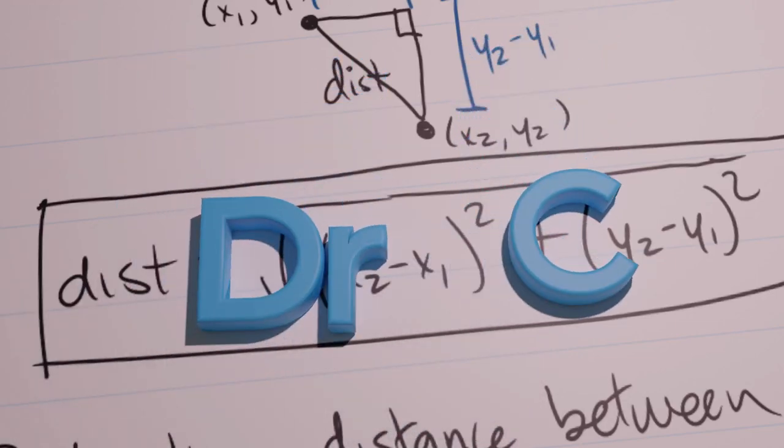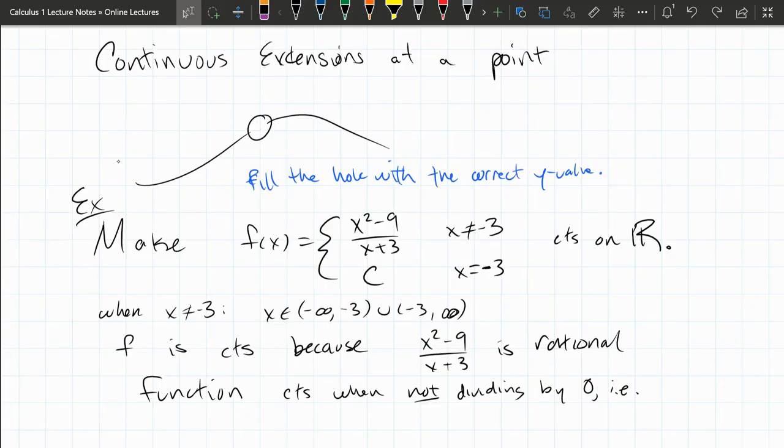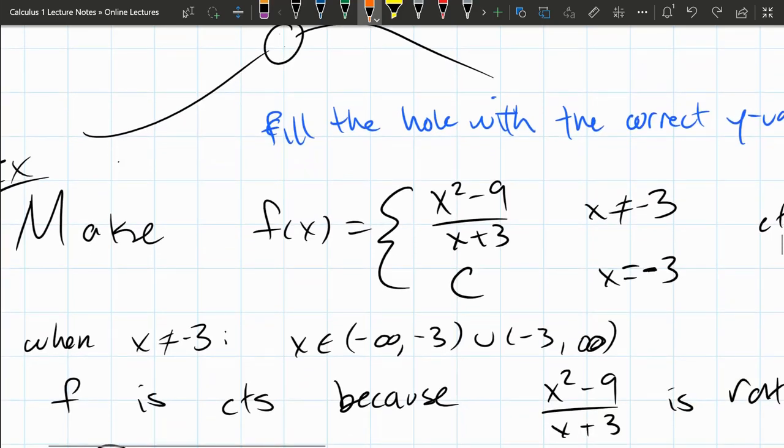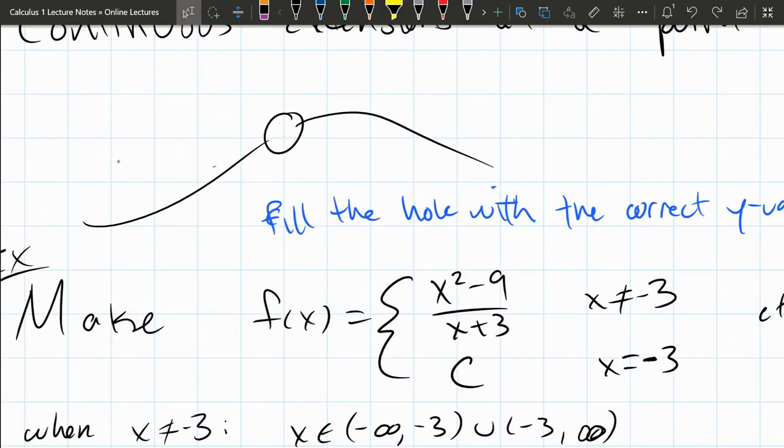The last type of question we have for the continuous function sections, we're going to start with a function that has a point removed. And what we want to do is fill this point in with the right value so the limit equals the value that we put in there. We need to figure out what y value the limit approaches, and then that y value will be the one that we choose right here.